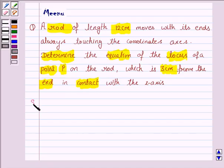Let us now move on to the solution. Here we have to find the locus of the point P on the rod which is 3 cm from the end in contact with x axis. For that we need to understand what is a locus. Locus is a moving point which satisfies certain condition.